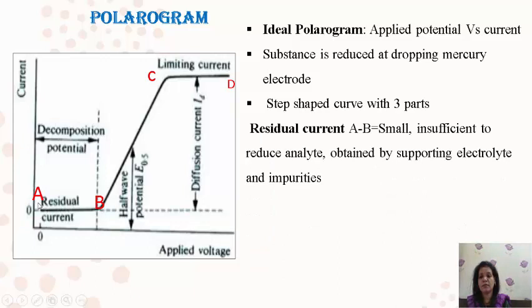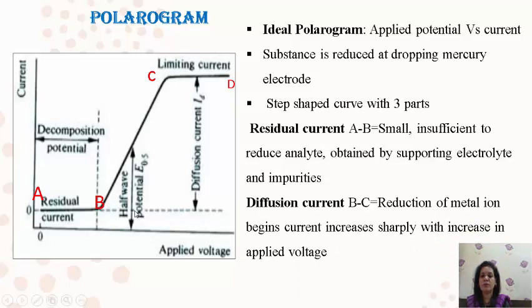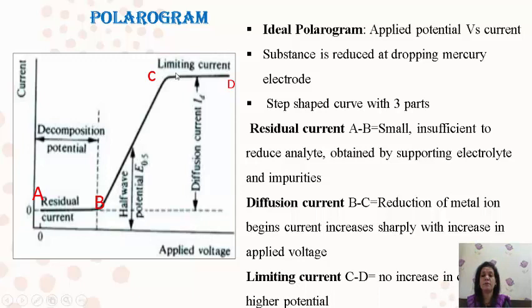The first part of the curve, segment A-B, is the residual current. You have not yet started the applied potential, but some amount of current is still produced due to impurities or the supporting electrolyte being added. So your curve never actually starts from zero — it starts somewhat above zero. The second part, B-C, is the diffusion current, developed where the substance or metal solution gets reduced. The metal ion is being reduced and produces current — that is the diffusion current. The last part, C-D, is the limiting current, where no increase in current is observed and it shows a plateau with increasing applied voltage.